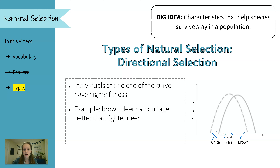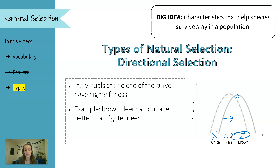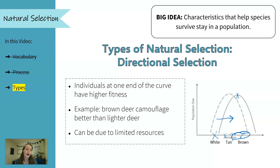So we see that in the next generation, our bell curve has shifted — it's moved in a direction. The deer who were at this end of the curve had a higher level of fitness, so they're better represented in the next generation, because those deer survived and reproduced and their offspring have their traits. We often see this pattern when there are limited resources and organisms are competing for food. So with directional selection, think of the curve moving in a direction, either to the right or to the left.